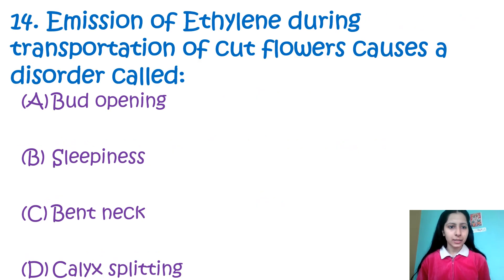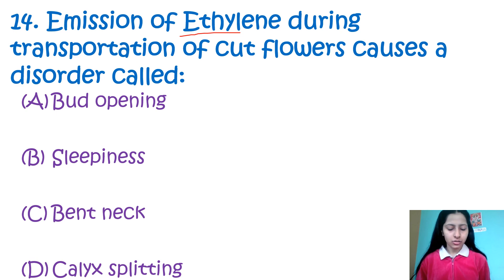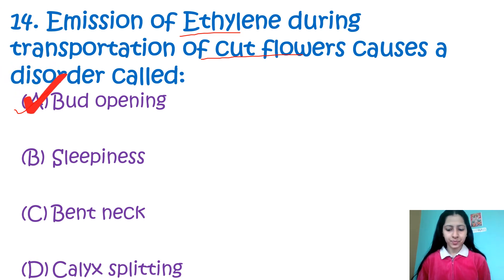Question 14: Emission of ethylene during transportation of cut flowers causes a disorder called — option A: bud opening, B: slippiness, C: bent neck, D: calyx splitting. The answer involves the disorder caused by ethylene emission during cut flower transportation.